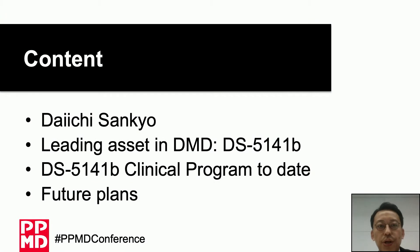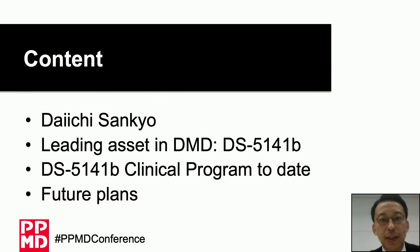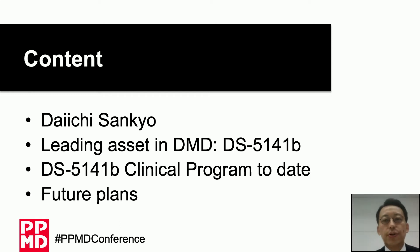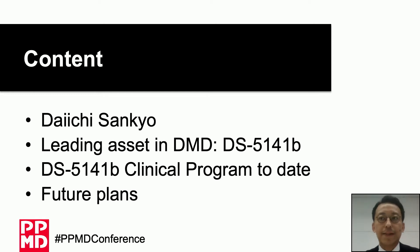Daiichi Sankyo is a global pharmaceutical company with presence in more than 20 countries. We are primarily focused on developing novel therapies in oncology, as well as other research areas centered on rare disease and cardiovascular disorders. The U.S. subsidiary is Daiichi Sankyo, Inc., in Basking Ridge, New Jersey.